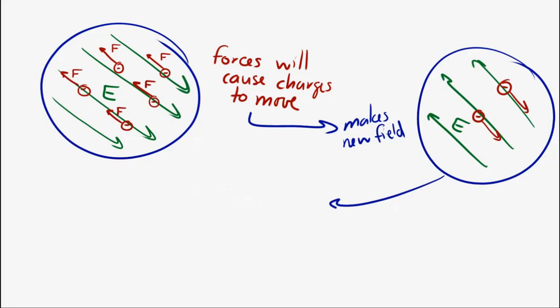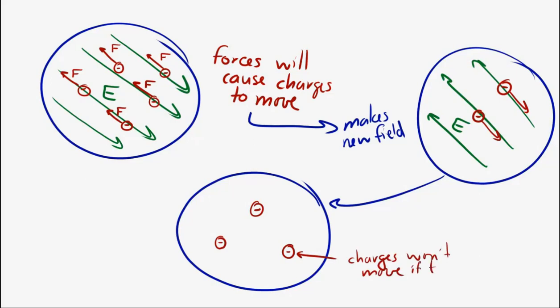When there's no more electric field inside the conductor, then everything is in equilibrium because there's no more electric field to cause a force on any of the charges. And it will be static, stationary, and the charges will remain that way.